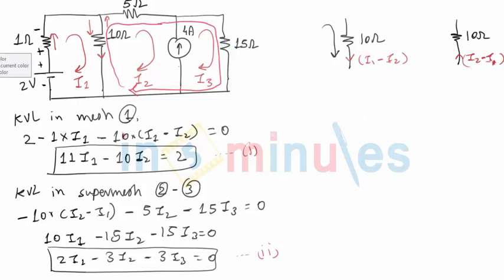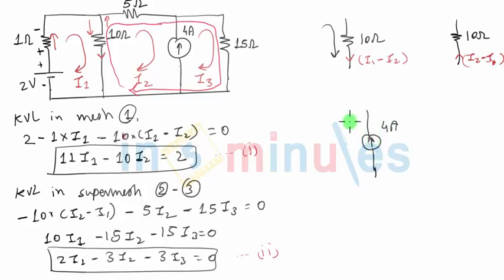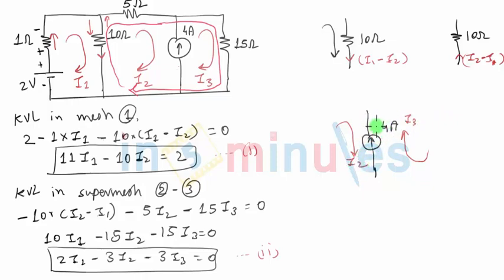The question is how to obtain the third equation, because there are three unknowns: I1, I2, and I3. To get the third equation, we consider that this 4-ampere current source is shared by two different meshes. Whenever a current source lies between two meshes, it will have two paths. I2 flows through this current source in mesh 2 in the downward direction, and I3 flows through mesh 3 in the upward direction. So the current source value must be the difference between I2 and I3, meaning 4 equals the difference between I2 and I3.